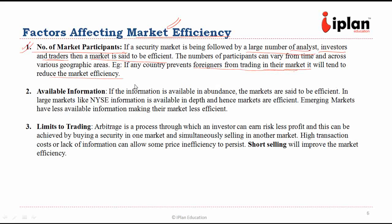The second factor affecting market efficiency is the availability of information. If information is readily available and there is no significant cost in obtaining it, markets will be said to be efficient. But if there is a lot of cost involved in getting that information, markets will not be efficient. For example, in the New York Stock Exchange the information is available in depth and markets are efficient, but in certain emerging markets where information is not readily available, it makes markets less efficient.